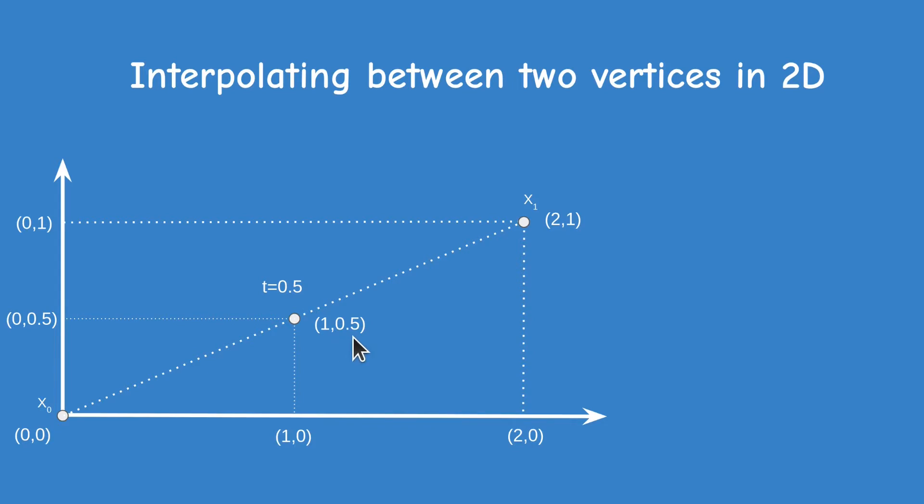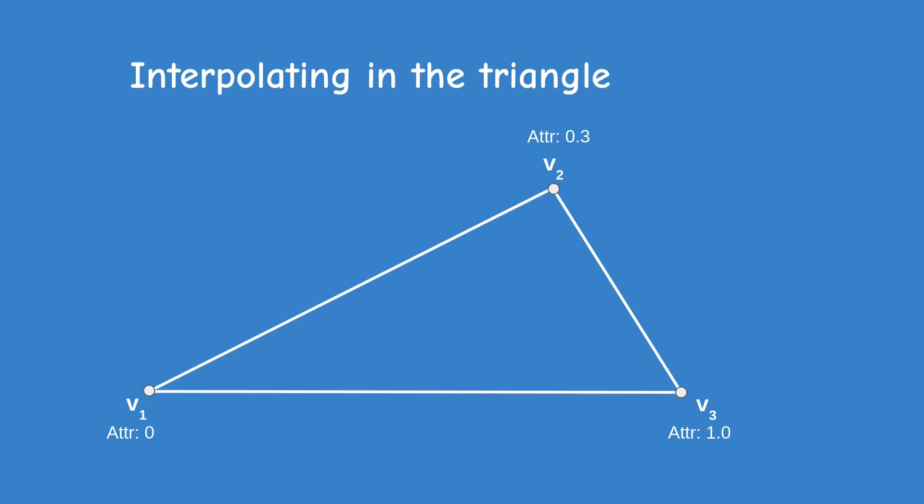This is all good but how does it apply to the triangle? In this diagram we have a triangle and each vertex has a value of some attribute attached to it. For simplicity I used a single component, but in the case of a color we would have three components, that is RGB. We already know that the position of the three vertices is provided in x and y in the range minus 1 to 1.